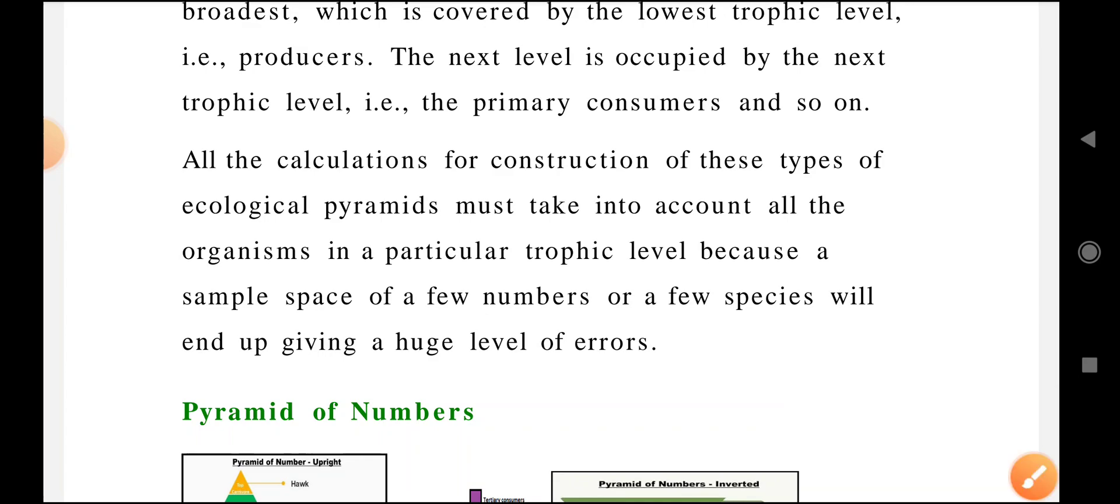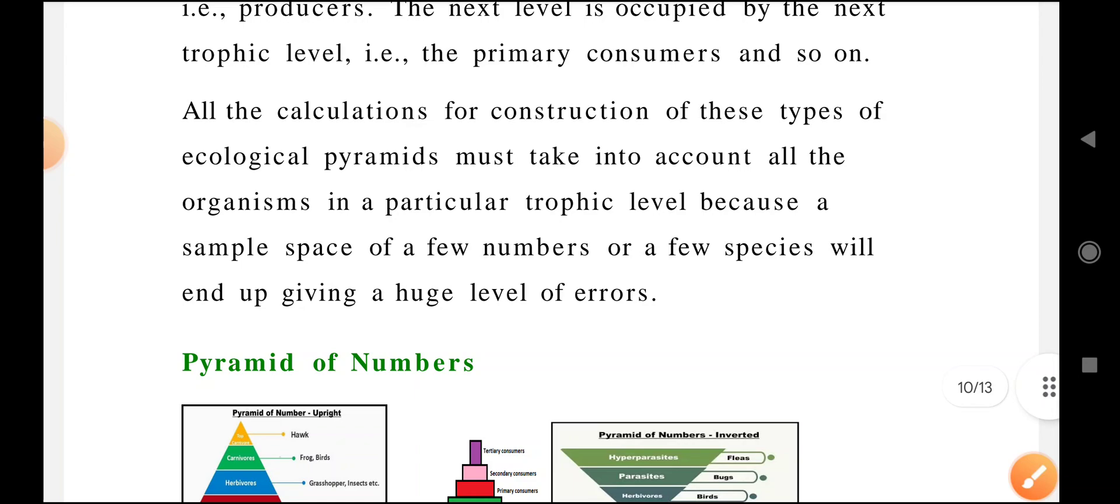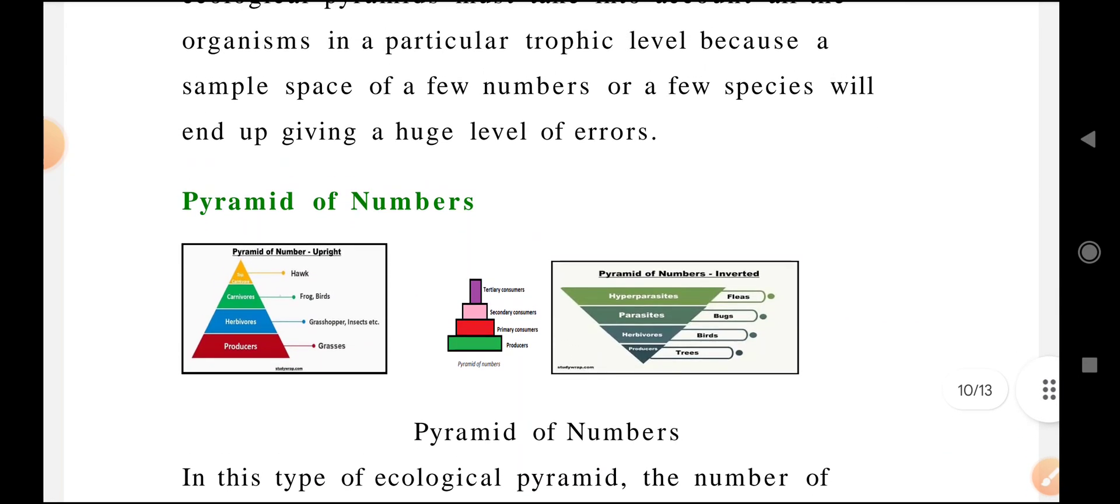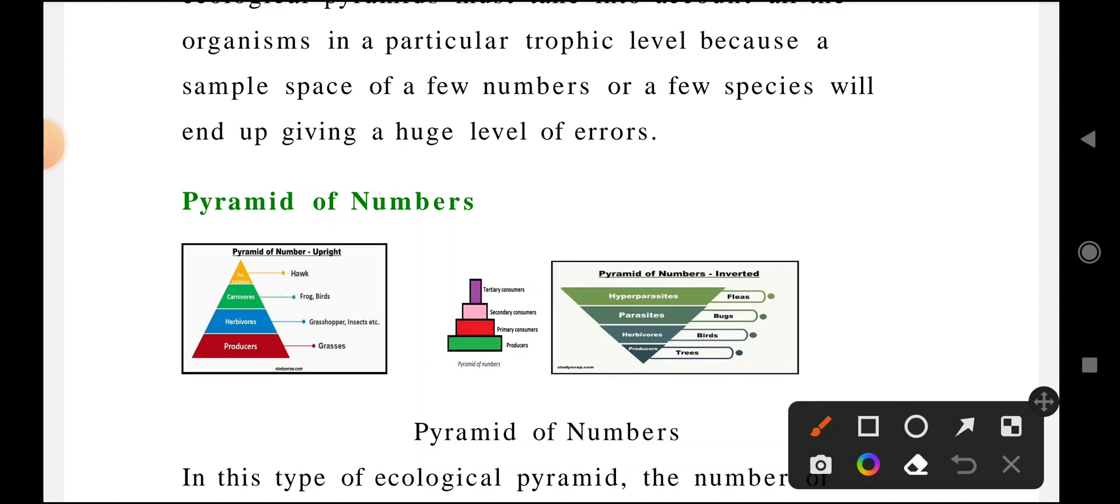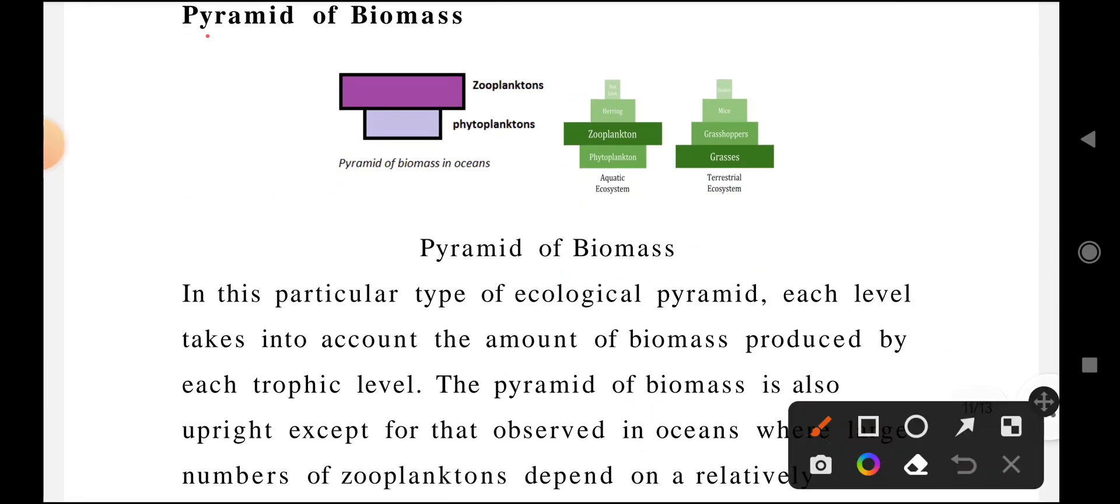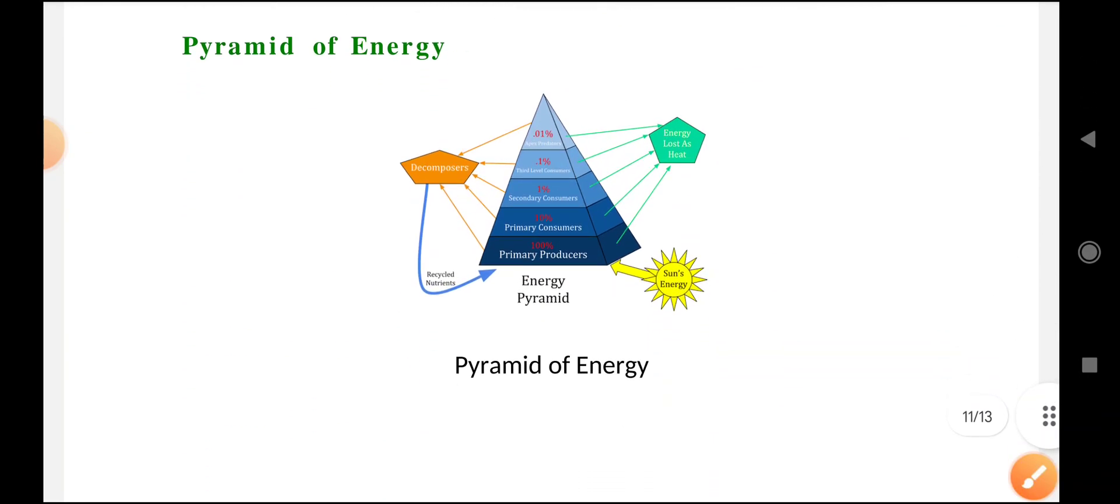There are three types of ecological pyramids classified: pyramid of numbers, pyramid of biomass, and pyramid of energy.